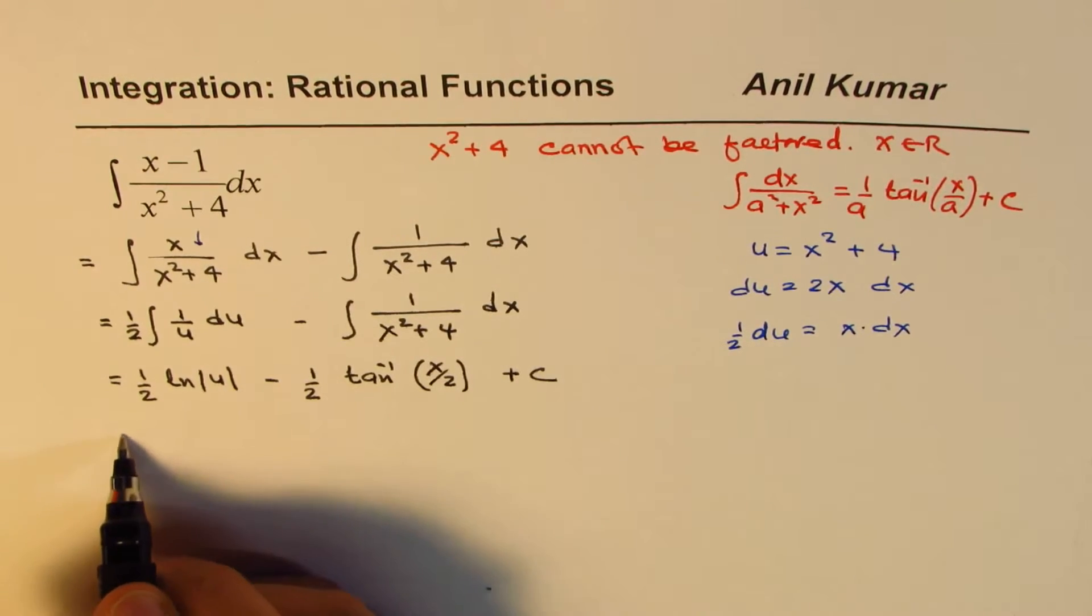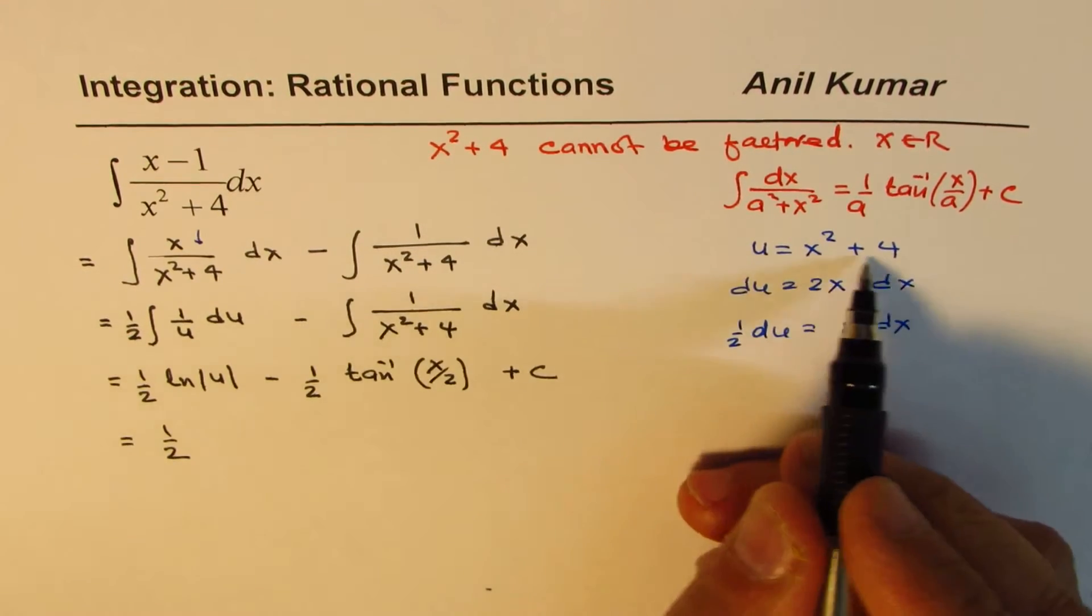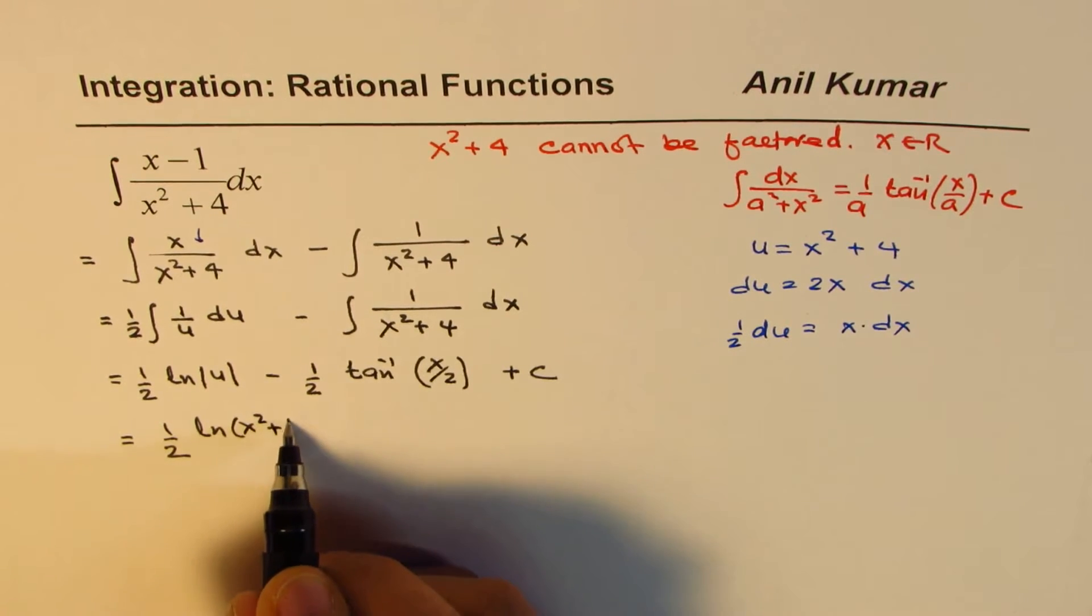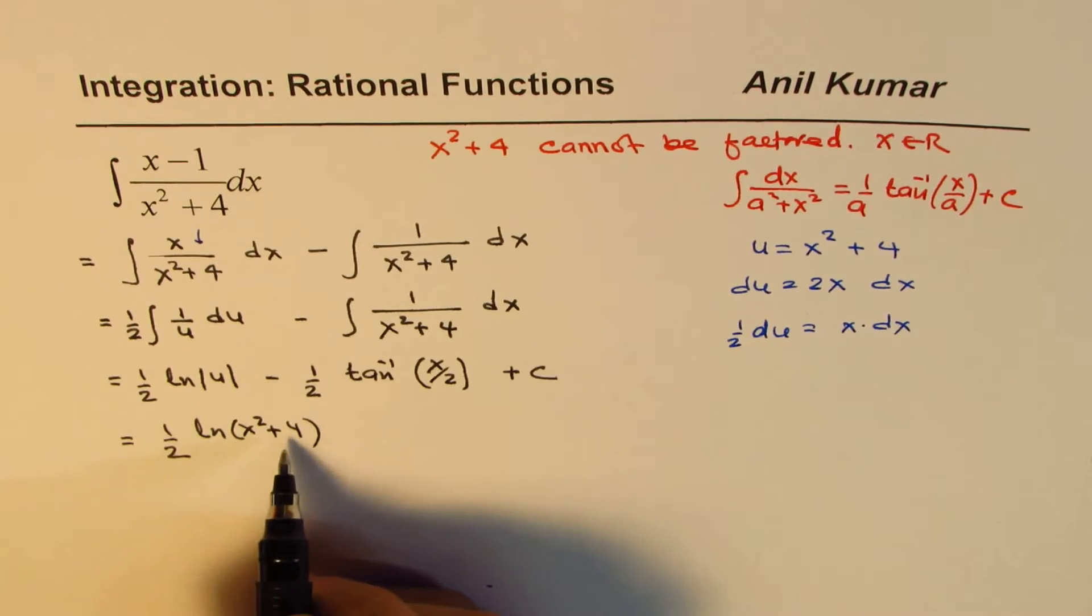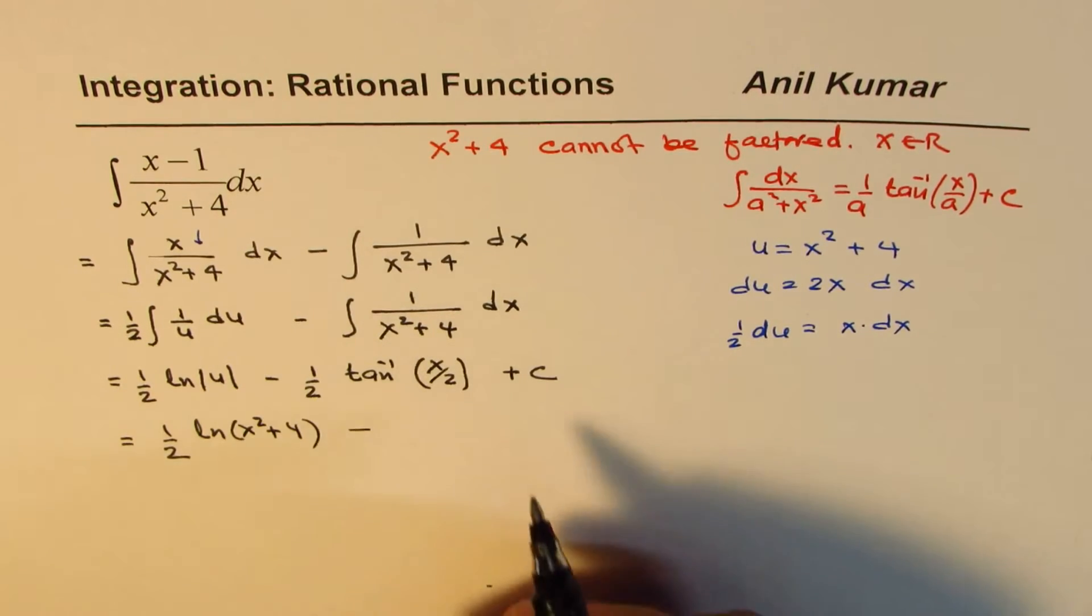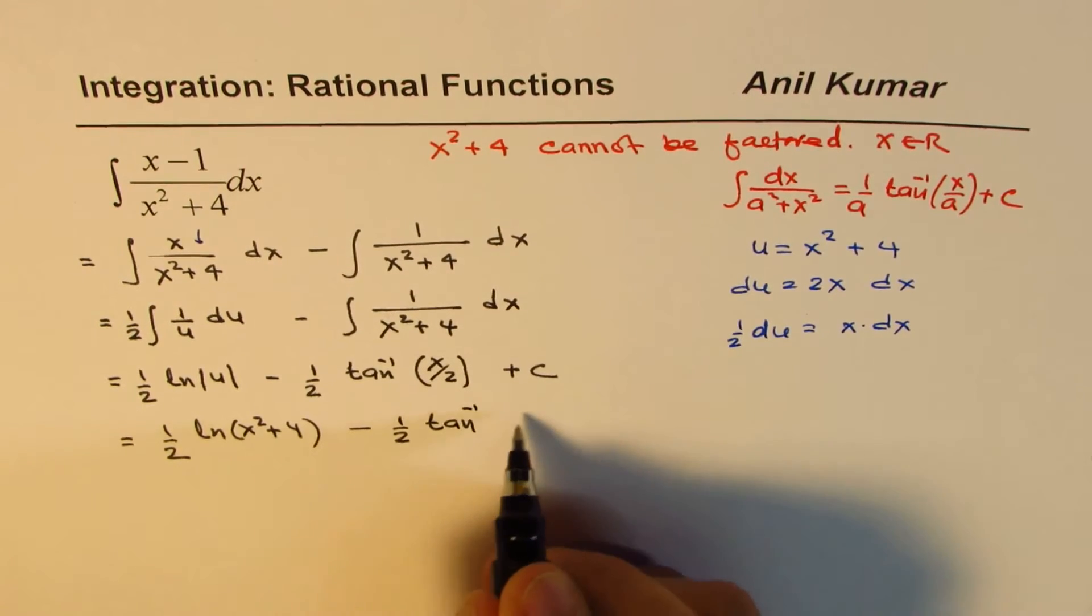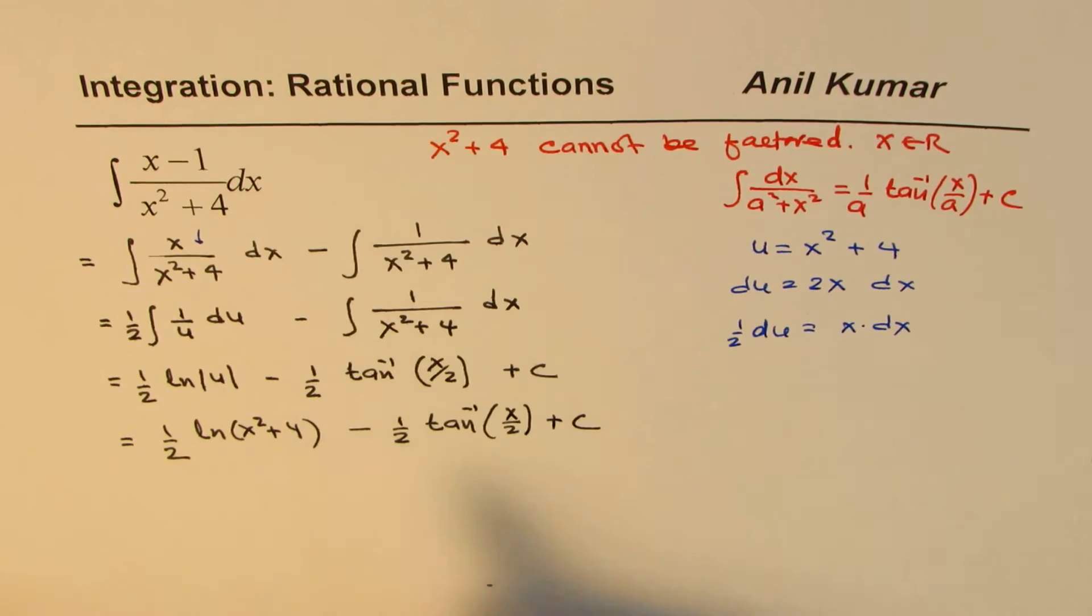We will replace u by this substitution, which is ln x square plus 4. Now, since this is always positive, we need not write absolute. Does it make sense to you? So, this solution will be x over 2 plus c.